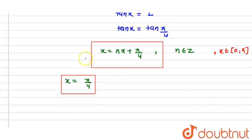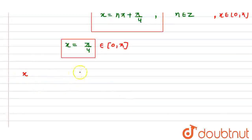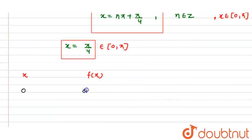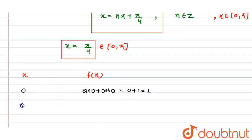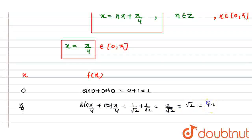अब absolute maximum और minimum value निकालने के लिए हम सभी points — endpoints और critical point — पर function की value check करेंगे। x = 0 पर: f(0) = sin 0 + cos 0 = 0 + 1 = 1। x = π/4 पर: f(π/4) = sin(π/4) + cos(π/4) = 1/√2 + 1/√2 = 2/√2 = √2, and √2 ≈ 1.41 — जो 1 से ज्यादा है।